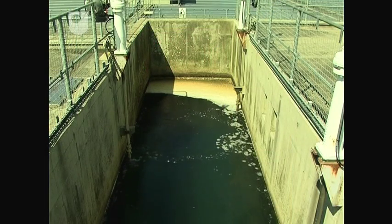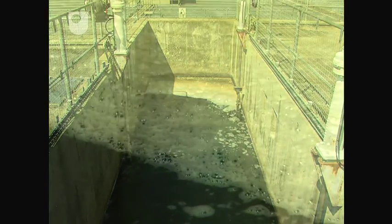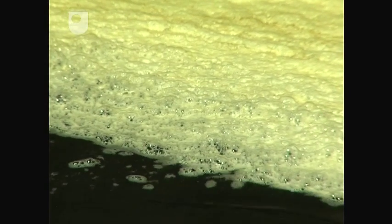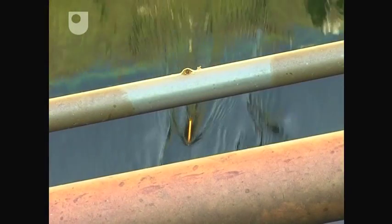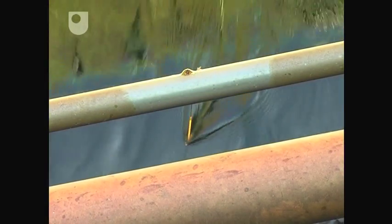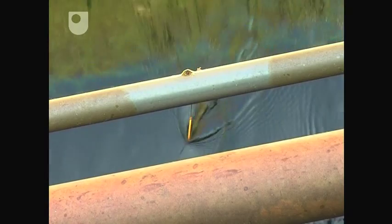The starches released from the dead algal cells form a scum on the water surface. The water, along with the scum, is then dosed with ferric sulphate to bring the dead algal cells together within flocks of ferric hydroxide.